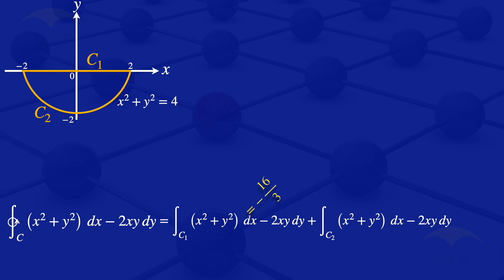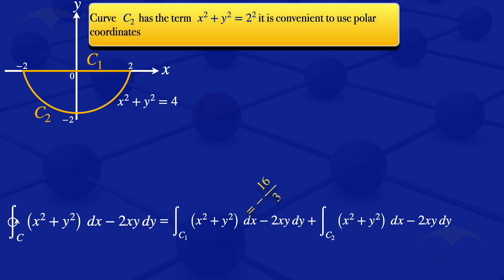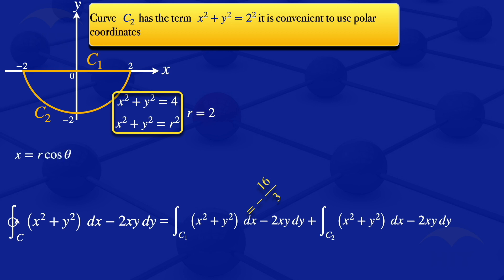We now move on to evaluating the integral along curve C2. C2 is defined by x squared plus y squared equals 4. When we have equations of that form, it is convenient to use polar coordinates. The equation x squared plus y squared equals 4 is a circle centered at the origin with r squared equals 4, so our radius r equals 2.